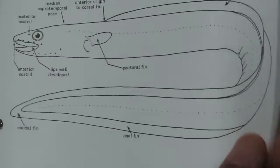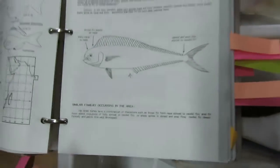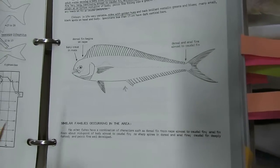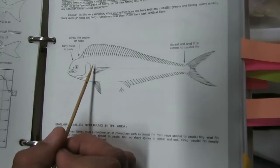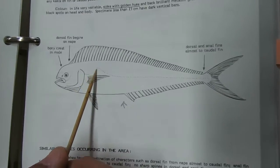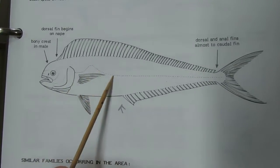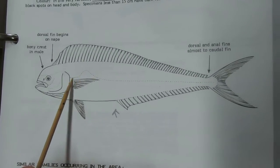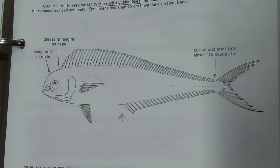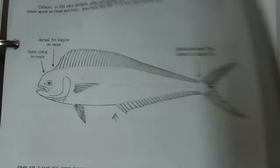Next is Coryphaenidae — dolphin fishes. The lateral line curves upward above the pectoral fin.